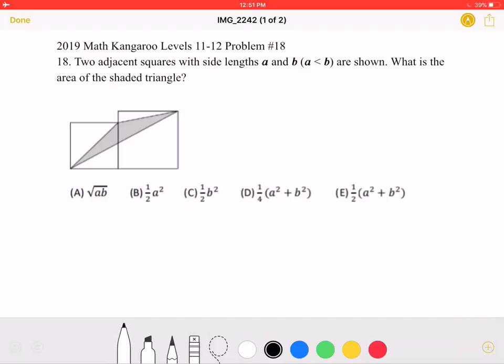Two adjacent squares with side lengths A and B, where A is less than B, are shown. What is the area of the shaded triangle?